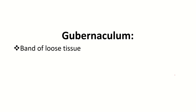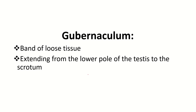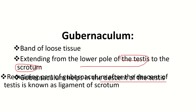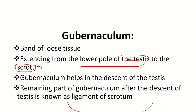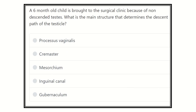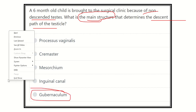This is all about the gubernaculum and descent of the testes. The gubernaculum is a band of loose tissue and it extends from the lower pole of the testes to the scrotum. It helps in the descent of the testes, and the remaining part is finally known as the ligament of scrotum or scrotal ligament. Now a question: a six-month-old baby is brought to a surgical clinic because of non-descended testes. What is the main structure responsible for descent of the testes? The answer is clearly the gubernaculum.